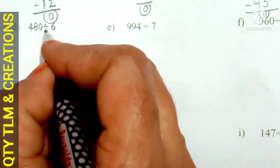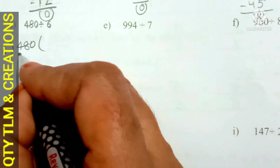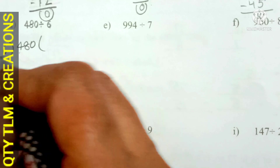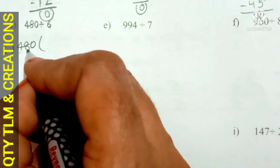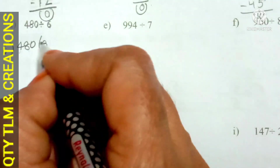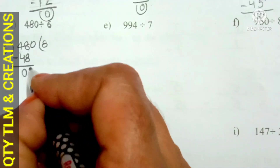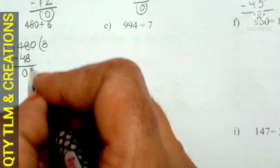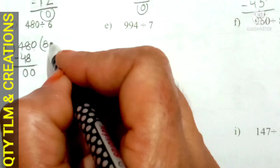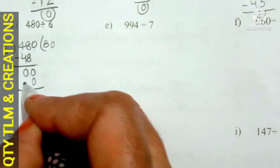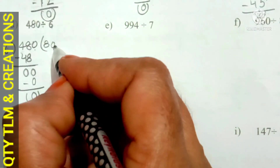Next, D. 480 divided by 6. We start with the hundreds place. 4 is less than 6, so we take 4 and 8 together: 48. 6 divides 48 for 8 times; 6 eights are 48. Remainder is 0. Bring down 0. 6 cannot divide 0, so we write 0. Remainder is 0, quotient is 80.